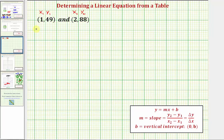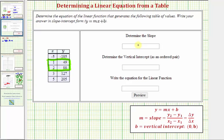So the slope m is equal to y sub two minus y sub one, that's 88 minus 49 divided by two minus one, which is equal to 39 divided by one, or just 39. So now we know the slope equals 39. Let's go back and enter this. So the slope is 39.